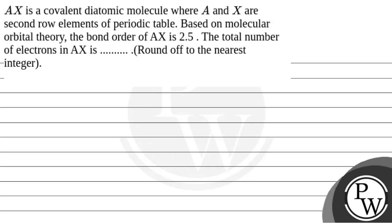AX is a covalent diatomic molecule where A and X are second row elements of the periodic table. Based on molecular orbital theory, the bond order of AX is 2.5. The total number of electrons in AX is, round off to the nearest integer.